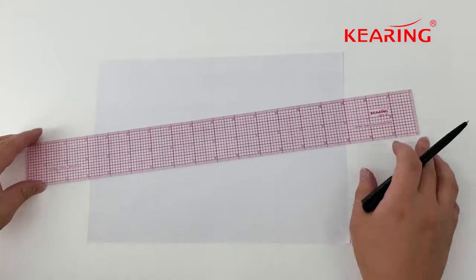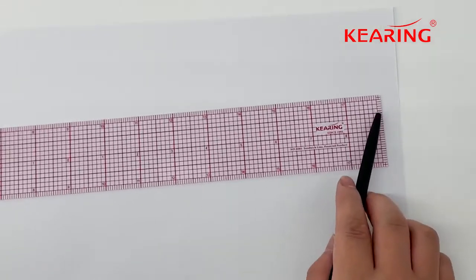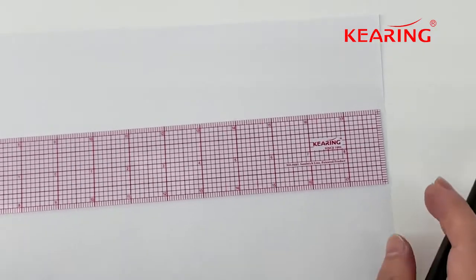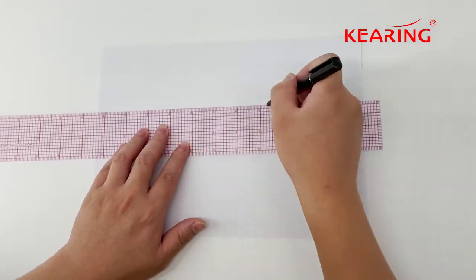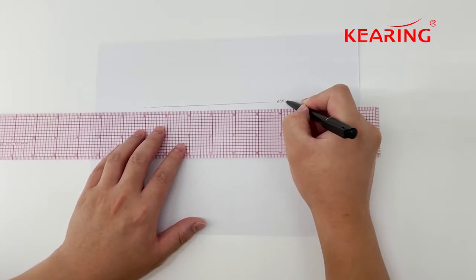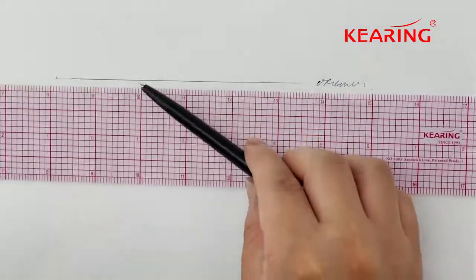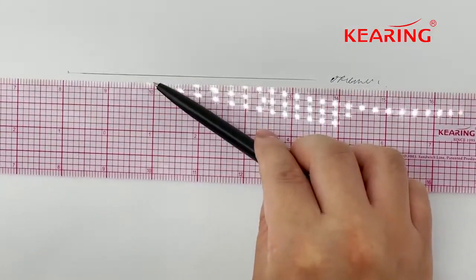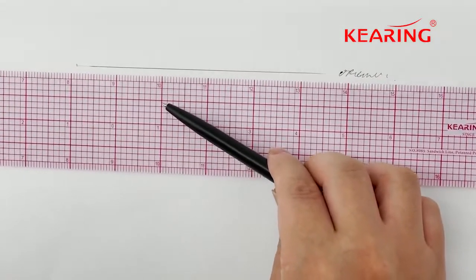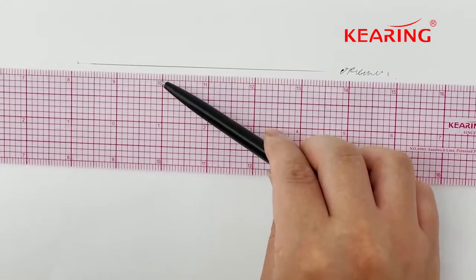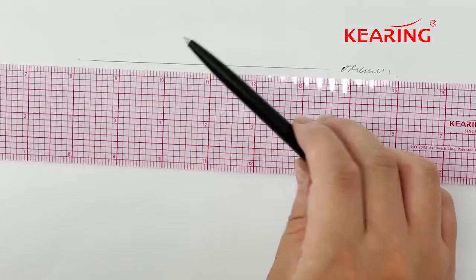In this video we will show you how to use this pattern grading ruler from Kirin, which has an 18-inch range. For example, we are setting along here as the original. When we read here, we can see in this part it is one inch, and here is half. The smallest space here is one-eighth inch.